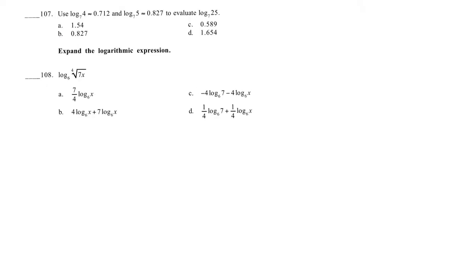Okay, so use log 7 of 4 is approximately 0.712, and log 7 of 5 is approximately 0.827 to evaluate the log 7 of 25. That I can write as the log 7 of 5 squared, which I can write as 2 log 7 of 5, which is 2 times 0.827, which is 1.6454.